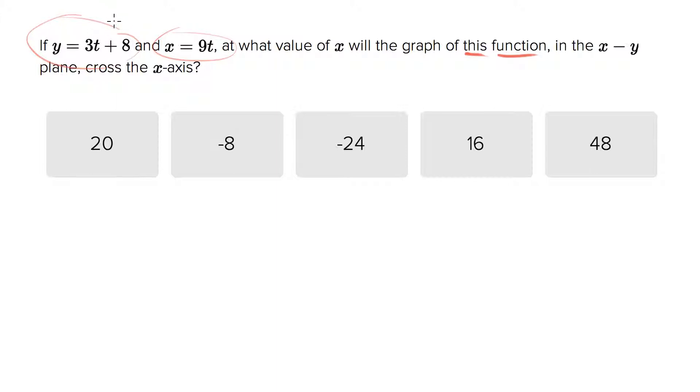This function is defined in a somewhat standard way that you might not recognize. The x and y are both being related in terms of a third parameter t. If you want to reveal the true x-y nature as you're used to seeing it, you need to substitute for t to get rid of it. Let's do that real quick and this will start to look more normal.